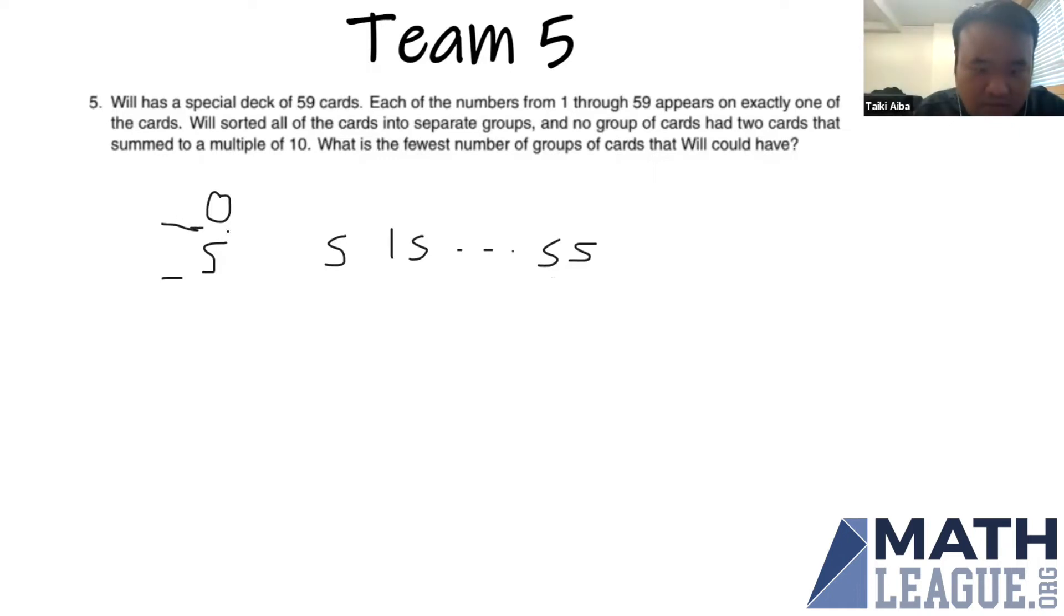As for the numbers which end in a zero, we have 10, 20, 30, 40, all the way up to 50, of which there are five numbers. We can see that because we have tens digit one through five inclusive.